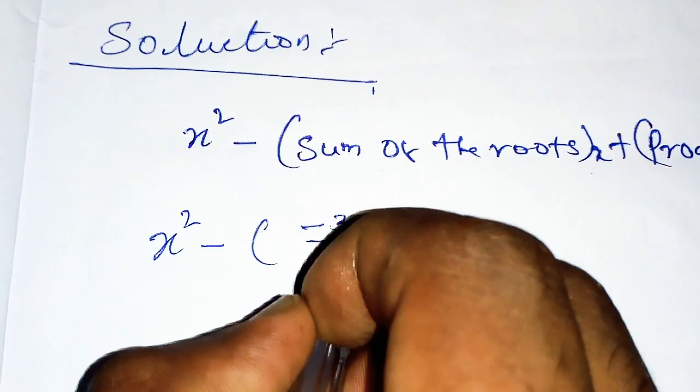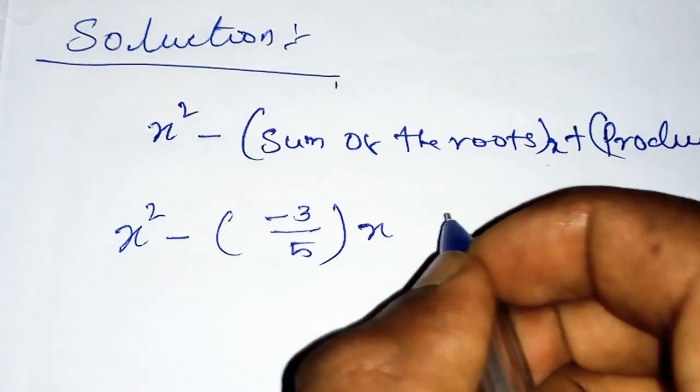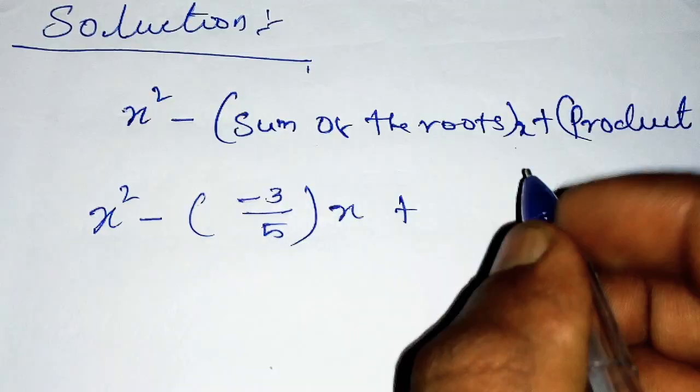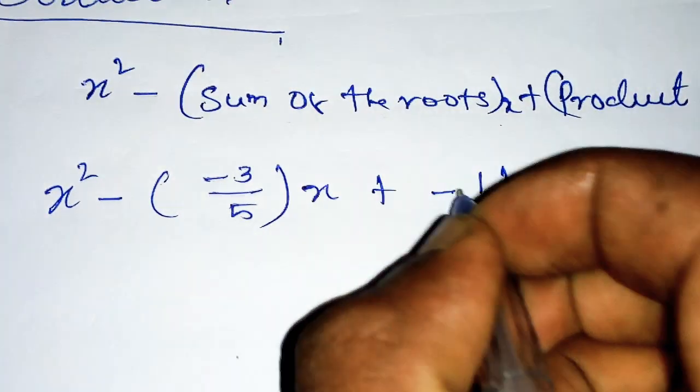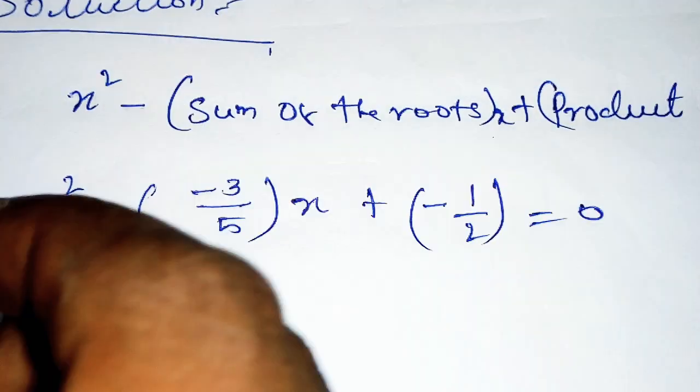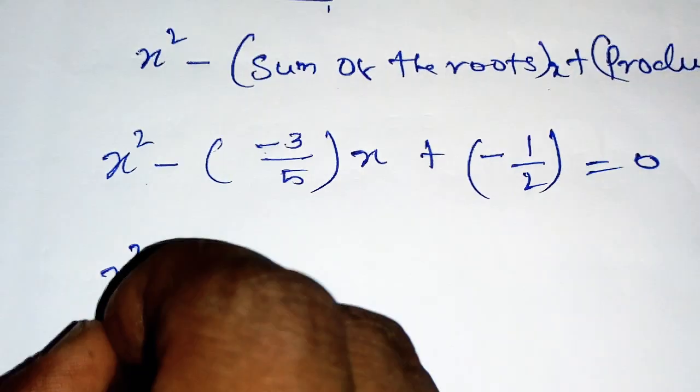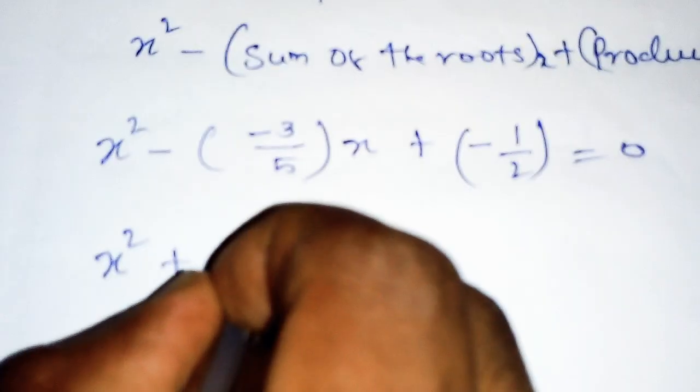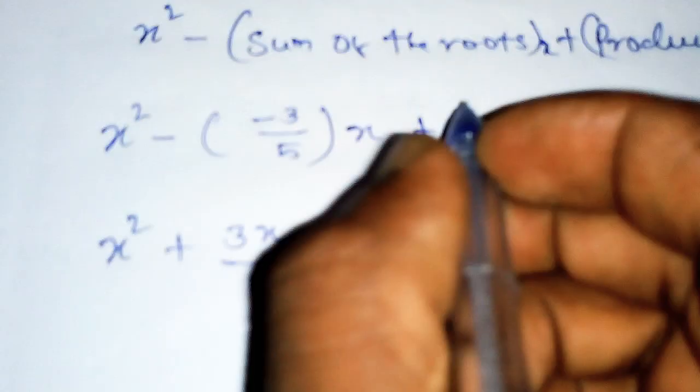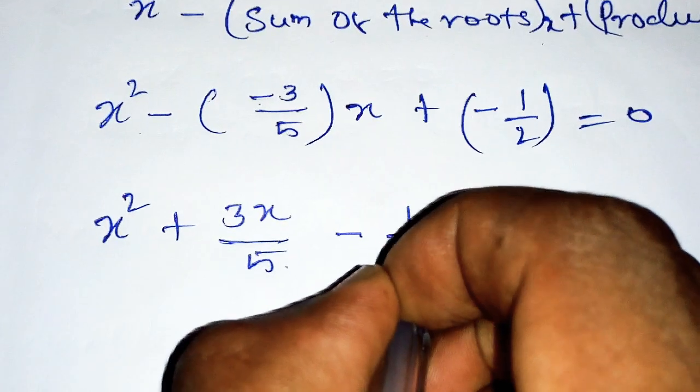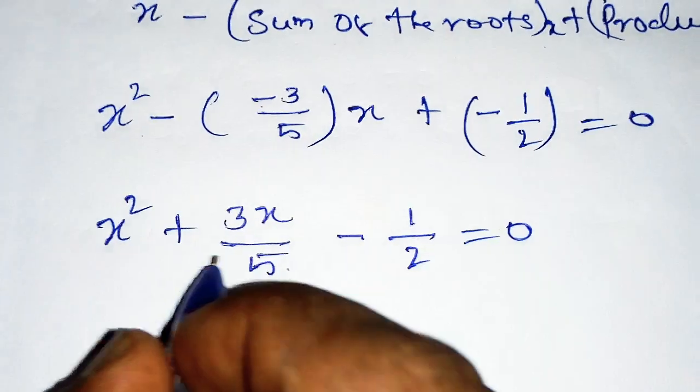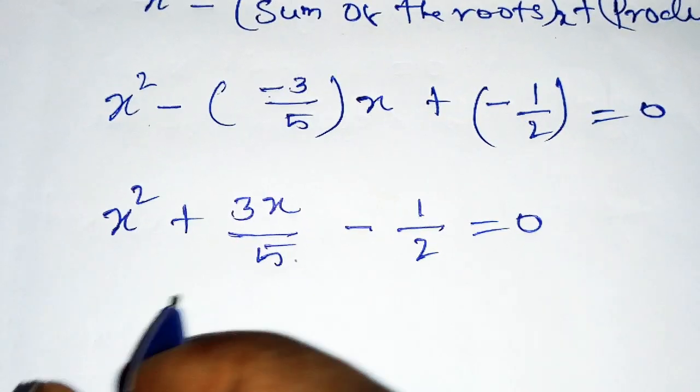which is -3/5 times x plus the product of the roots which is -1/2, equals zero. Simplifying: x² minus times minus becomes plus 3x/5, plus times minus becomes -1/2, equals zero. The denominators are not equal.